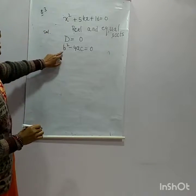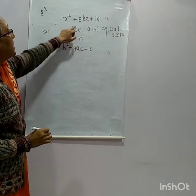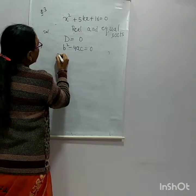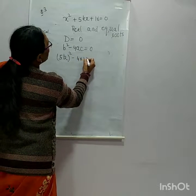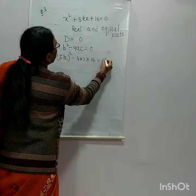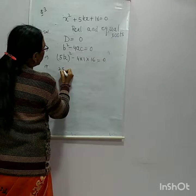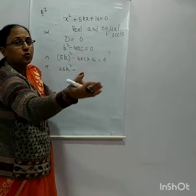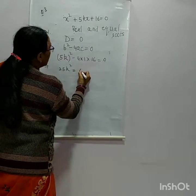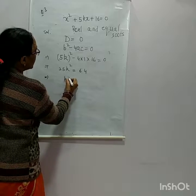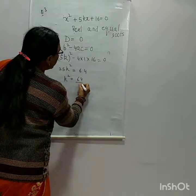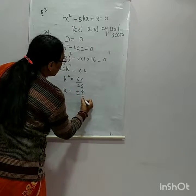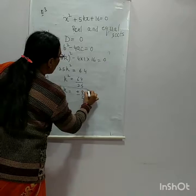Put in the values: B = 5K (coefficient of X), A = 1, C = 16. So (5K)² - 4(1)(16) = 0, giving 25K² - 64 = 0. Therefore K² = 64/25, and K = ±8/5. This is the value of K.